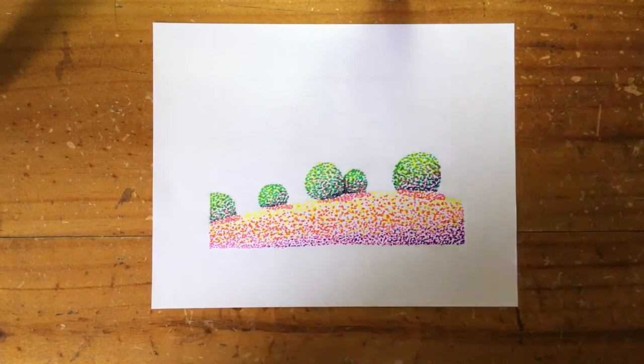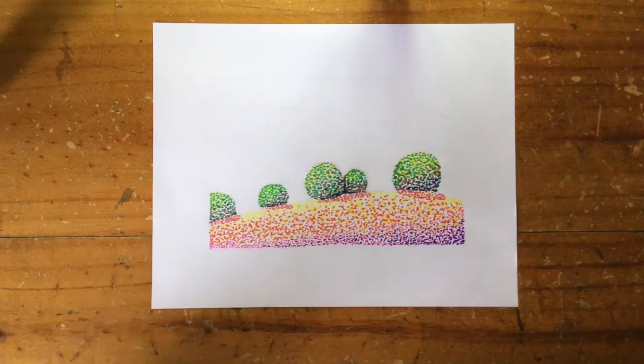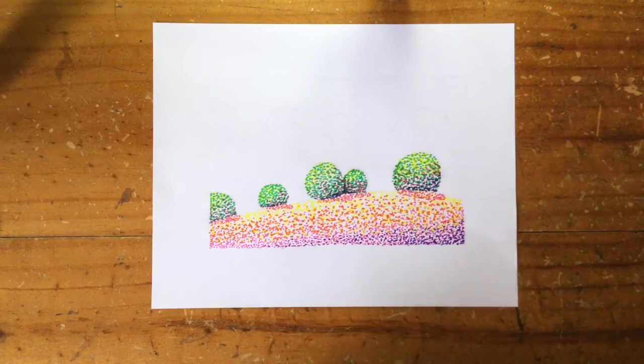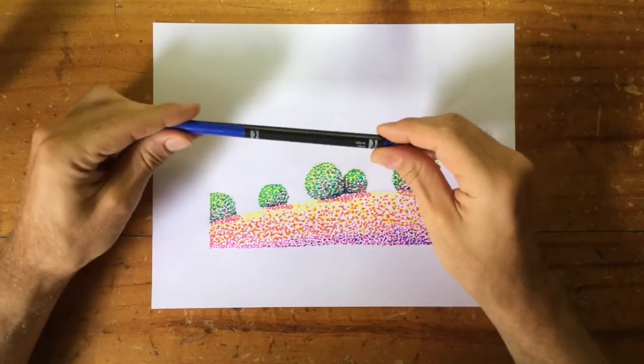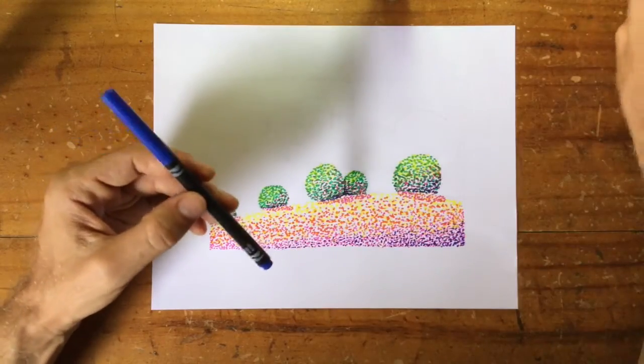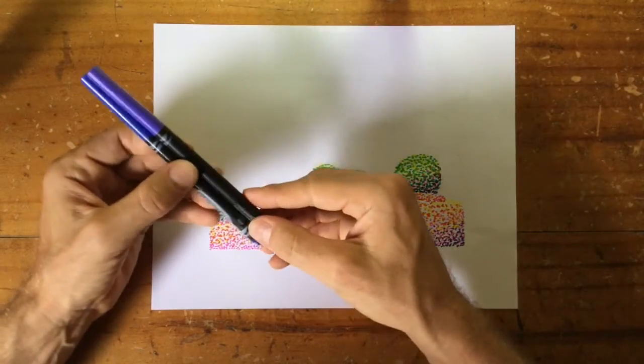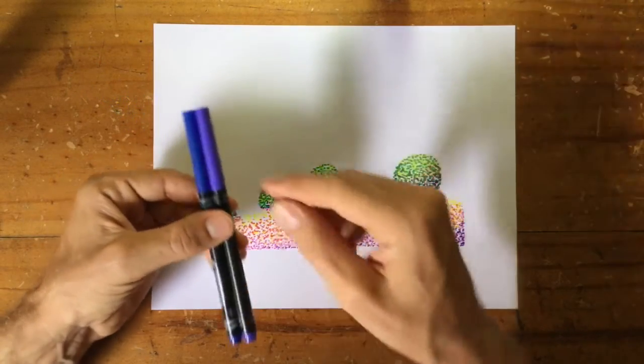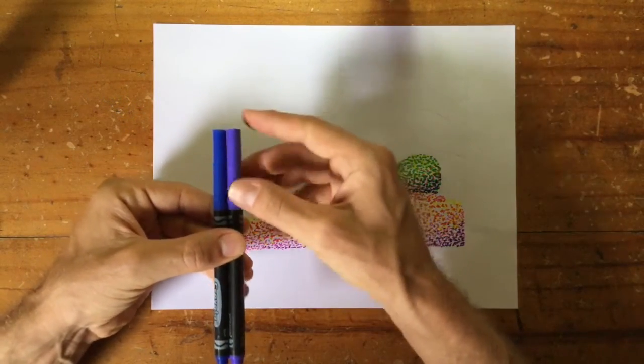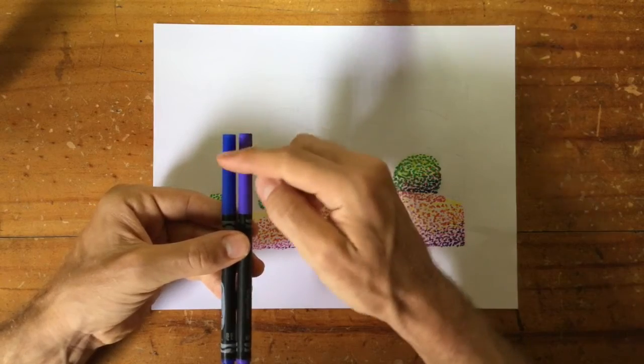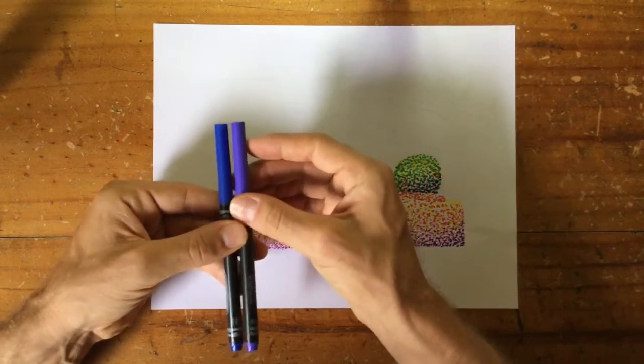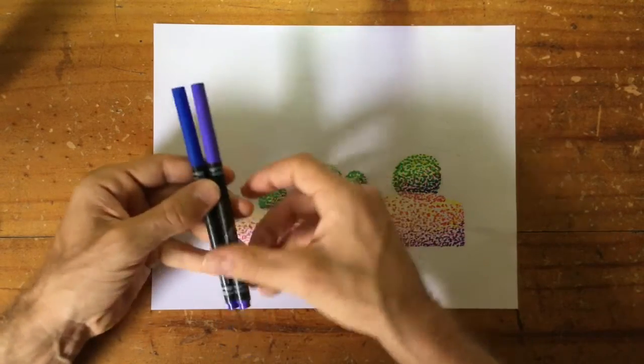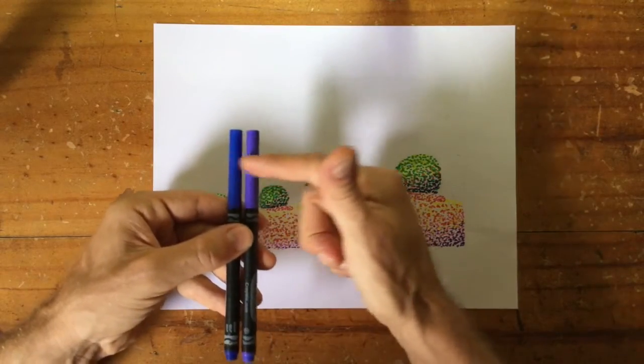So the next thing we're going to do is the mountain behind. And we're going to start with a blue for this one, quite a dark blue. And it should be quite similar to the purple that you used at the bottom, similar in the sense that it's kind of a similar tone. It's not much darker or much lighter. Of course it's different because it's blue and not purple, but you see how they're kind of a similar tone.